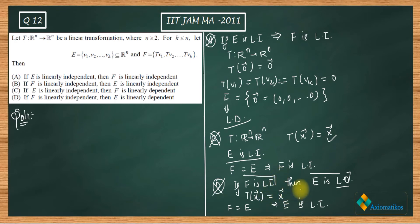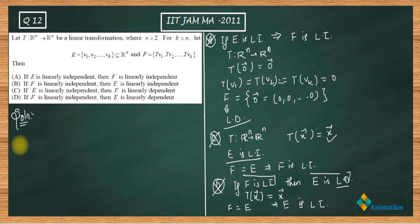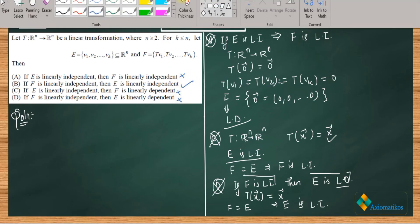By using just two basic transformations — the zero transformation and the identity transformation — we have discarded every other option. If you are strong enough in linear algebra, you can think of these examples in just five or six seconds, so it should not take more than one minute. Now let us mark all other options incorrect and proceed to prove option B is correct.